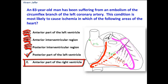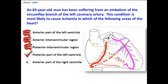Option E: Anterior part of the right ventricle. The anterior part of the right ventricle is supplied by ventricular branches from the right coronary artery or from the marginal branch of the right coronary artery, and it is not related to the circumflex branch of the left coronary artery. So the correct answer is the posterior part of the left ventricle.